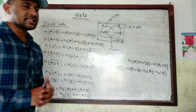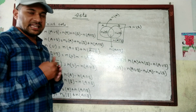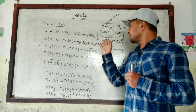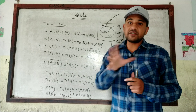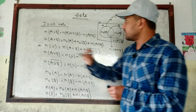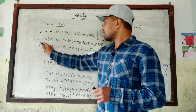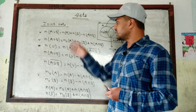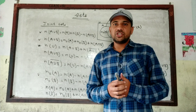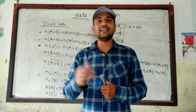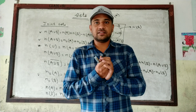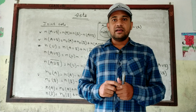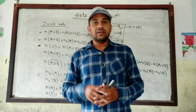Hope you understand all the formulas for two sets. Very soon I will bring you the three-set formula — for set A, set B, and set C — and how to find the formula using a diagram. If you understand this diagram properly, you can create all formulas yourself. The important formulas are n(A∪B), n(U), n(A), and n(B) — if you know these, you can find the others. Thanks for watching. Please like, share, and subscribe. If you need the three-set formula, comment below.